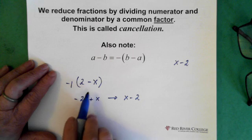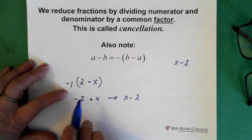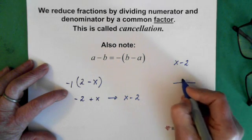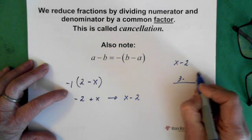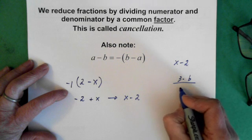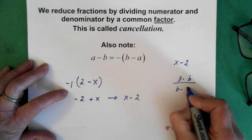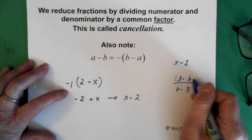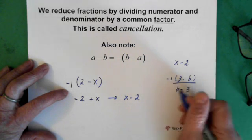It's just something that you need to remember because you will come up with stuff where you might have, for example, 3 minus b divided by b minus 3. So all you do is multiply top and bottom by minus 1.